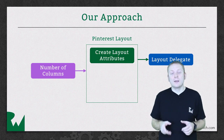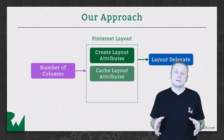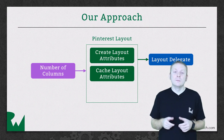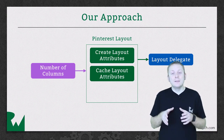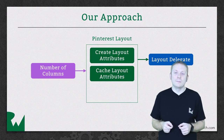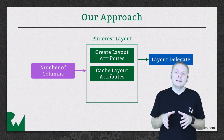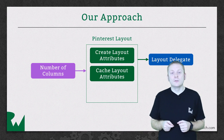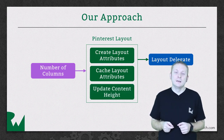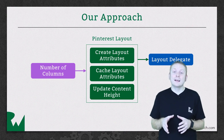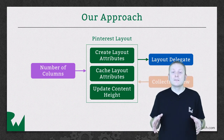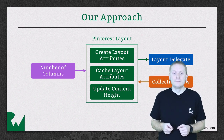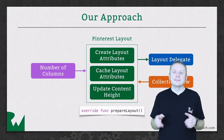As the layout attributes are being created, they'll also be cached, and then when the collection view requests them by way of layoutAttributesForElements(inRect), we can query the cache rather than having to generate them fresh each time, and this is important because you want to be as efficient as possible. Finally, as we're going through creating the layout attributes, we'll also be continuously updating the content height. Once all cells are catered for, the content height will represent the tallest column in the layout, and then the collection view can configure its scrolling accordingly. All of this will take place in prepareForLayout.